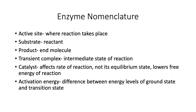There's the transient complex, which is the intermediate state of the reaction. We postulate this as part of the kinetics. It is an entity which is eliminated in mathematical equations, but it does form an intermediate and can further break down the reaction into a two-step procedure: the first step culminating in the transient complex, and the second step being the complex producing the products. A catalyst affects the rate of reaction, but not its equilibrium state. It lowers the free energy of the reaction — this is what the enzyme does, and the activation energy is lowered. It is the difference between the energy levels of the ground state and the transition state.